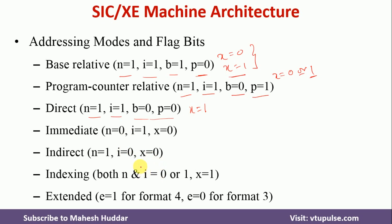We have one more addressing mode: if I equals 1, X equals 0, and N equals 0, this is called immediate addressing mode. At the same time, if N equals 1 and the remaining flags are 0, it is called indirect addressing mode.